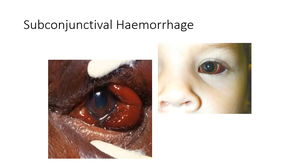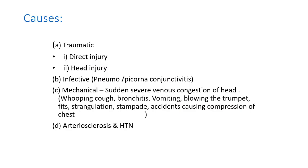In this picture you can see a chemosed conjunctiva with a totally subconjunctival hemorrhage — a bright red color. There can be a collection of blood in quantity that causes the conjunctiva to bulge out, giving both chemosis and subconjunctival hemorrhage. This can be called ecchymosis of the conjunctiva.